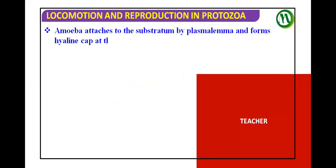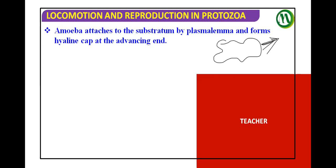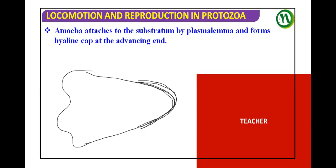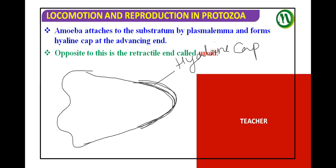During the formation of pseudopodia, amoeba attaches to the substratum by plasma lemma and forms the hyaline cap — the transparent cap — at the advancing end. The opposite end is called the retractile end or uroid end, which is the wrinkled surface.